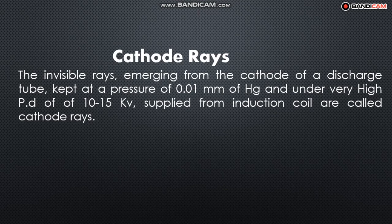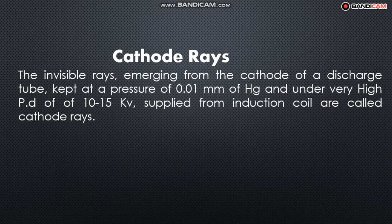What is a cathode ray? The cathode ray is the invisible ray emerging from the cathode of a discharge tube, kept at a pressure of 0.01 mmHg and under a very high potential difference of 10 to 15 kV supplied from an induction coil. These cathode rays are simply a stream of electrons moving from cathode towards the anode — luminous rays that are otherwise invisible.